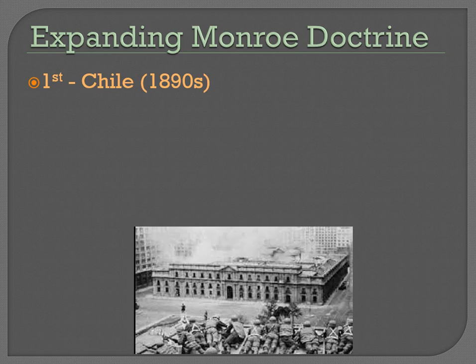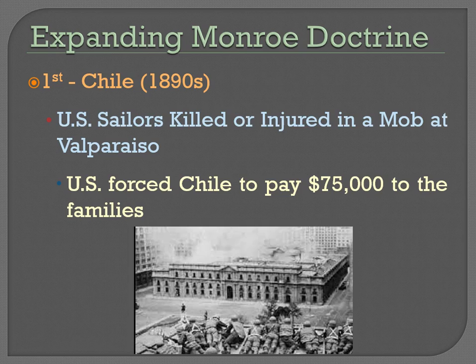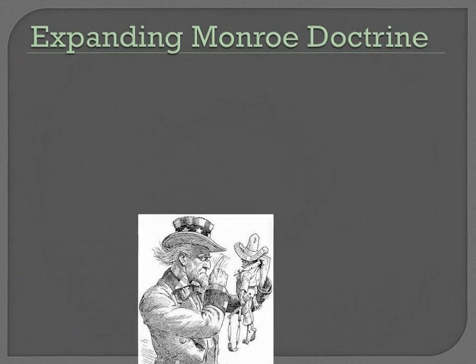We're also going to put into play the Monroe Doctrine. Remember, in 1823 we declared that Europe should stay out of the Americas, both North and South America. The first example is Chile in the late 1890s. An American sailor was there and was killed by a mob in the city of Valparaíso. It really had nothing to do with the government of Chile — chances are it was just a bad place at the wrong time. But the United States forces Chile to claim responsibility, forces Chile to say that it's their fault, and forces them to pay $75,000 — a huge sum at the time — to the families. Is this right? Is this just? Nope. But we're going to flex our muscle, saying we have the right to rule over the Western Hemisphere.